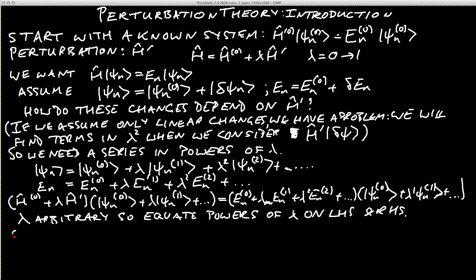When you do that, the zeroth order terms give you H⁽⁰⁾ acting on ψₙ⁽⁰⁾ equals Eₙ⁽⁰⁾ψₙ⁽⁰⁾. That's not very surprising, that's just the original equation we started with. But it's reassuring we haven't made any mistakes.